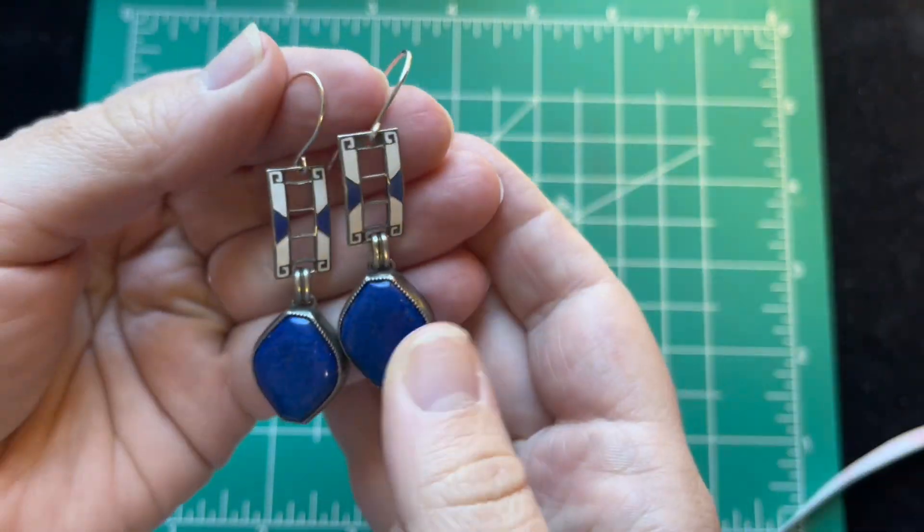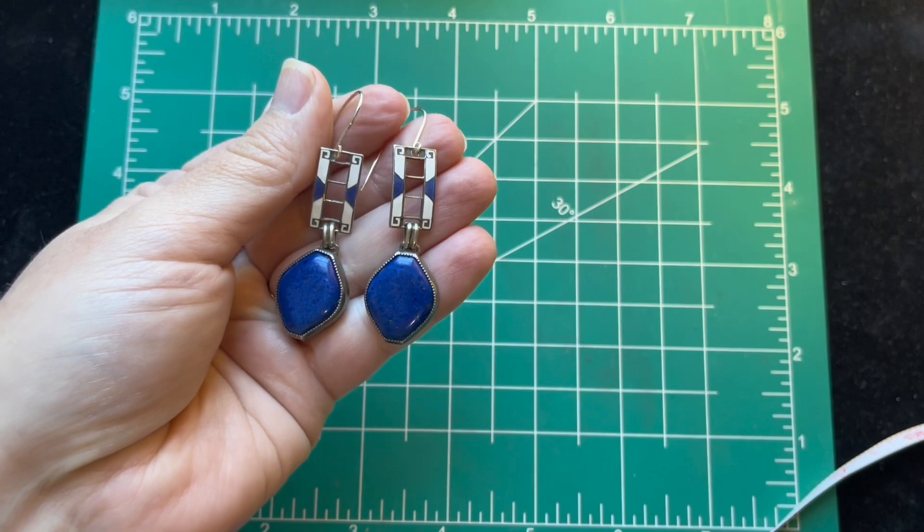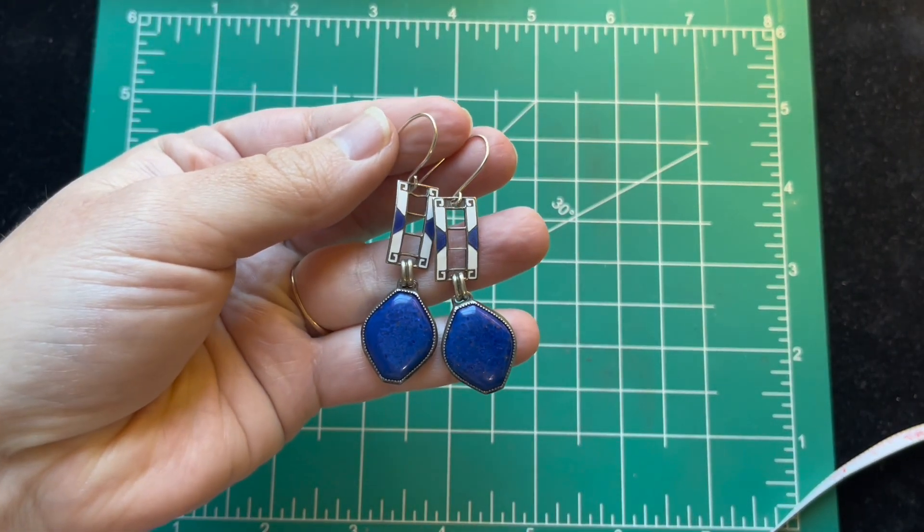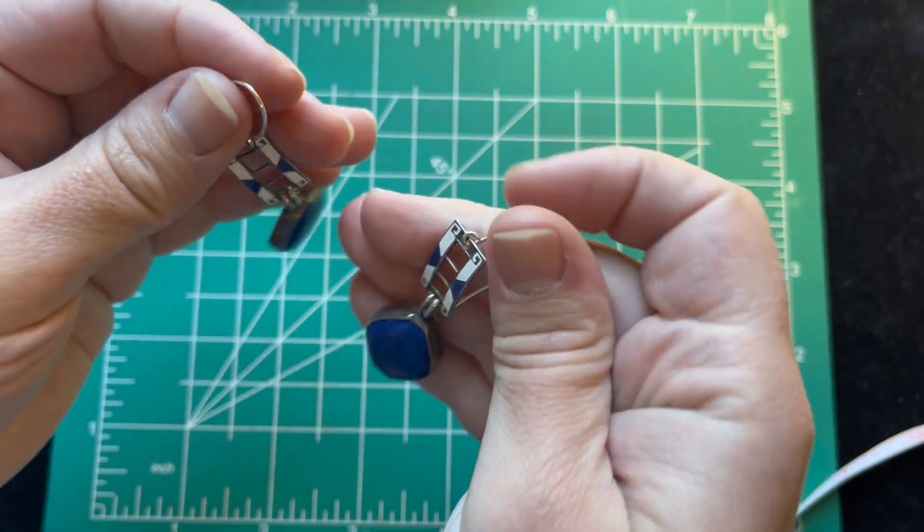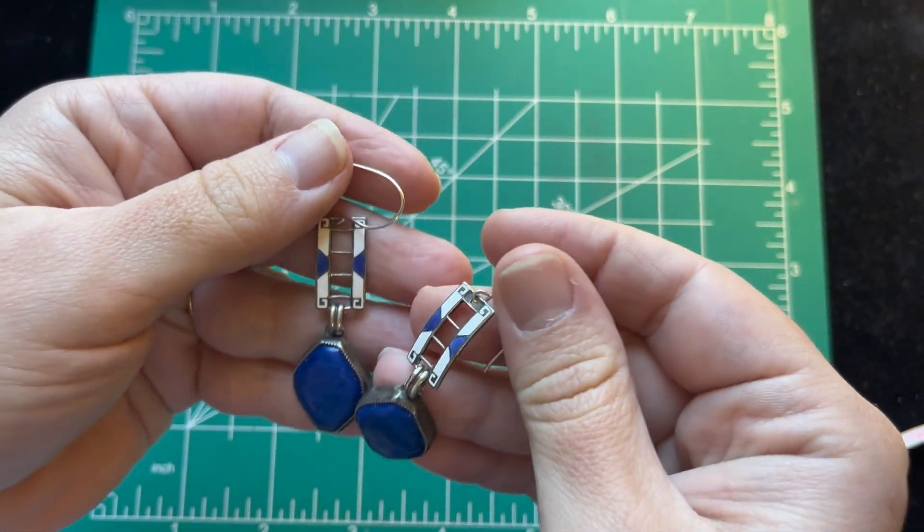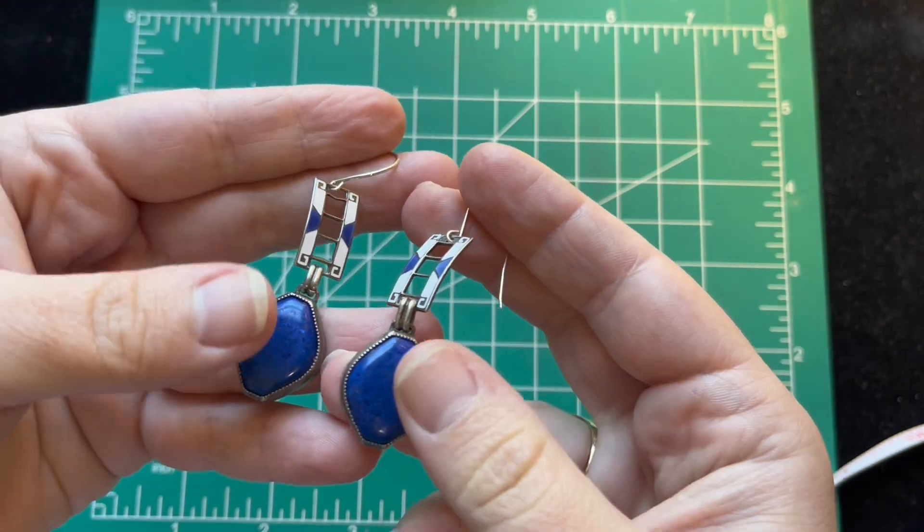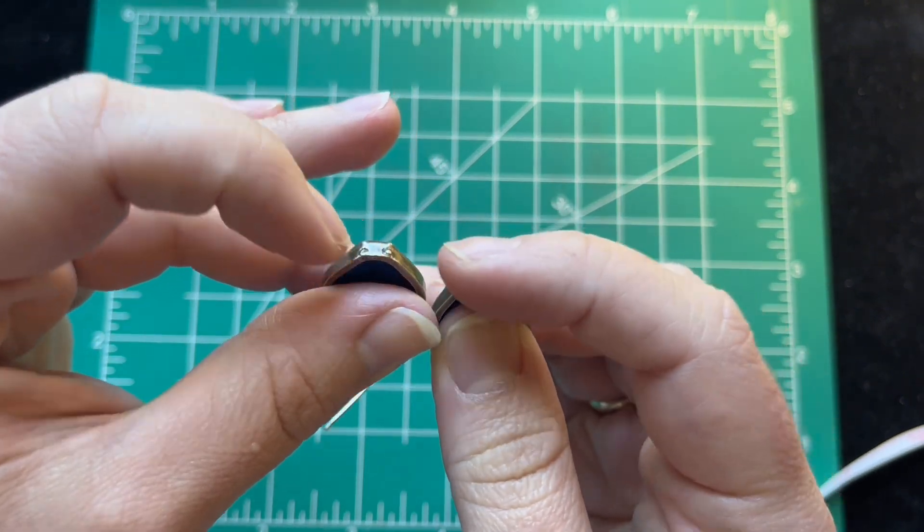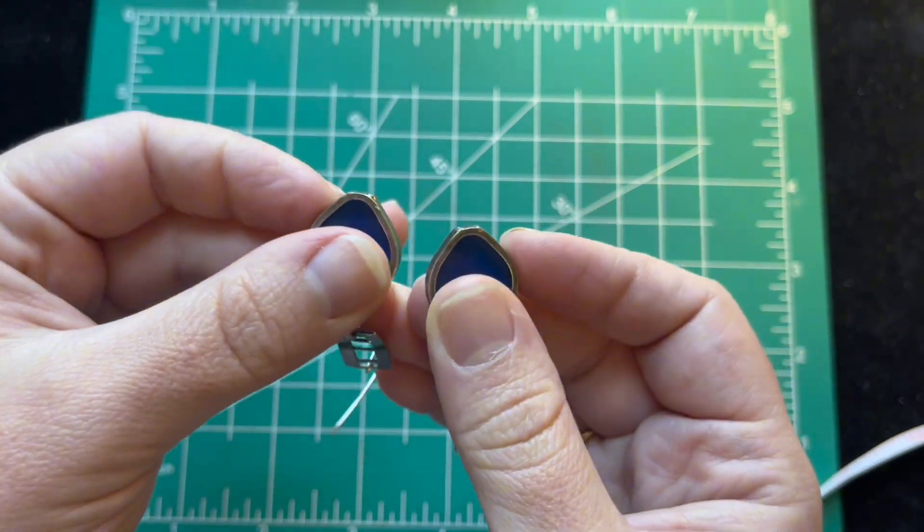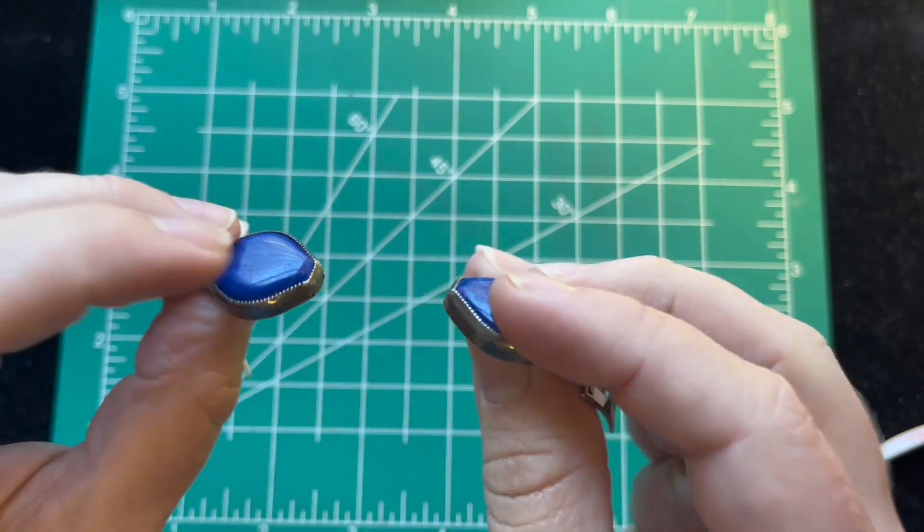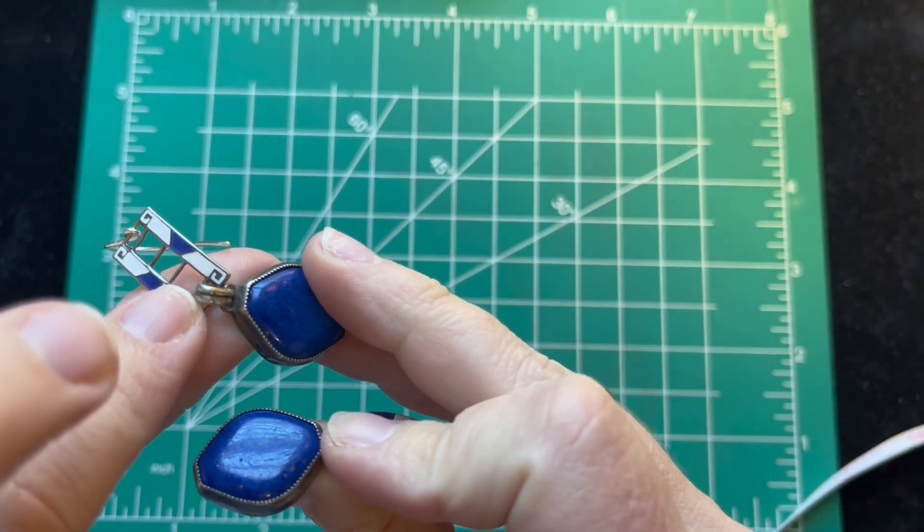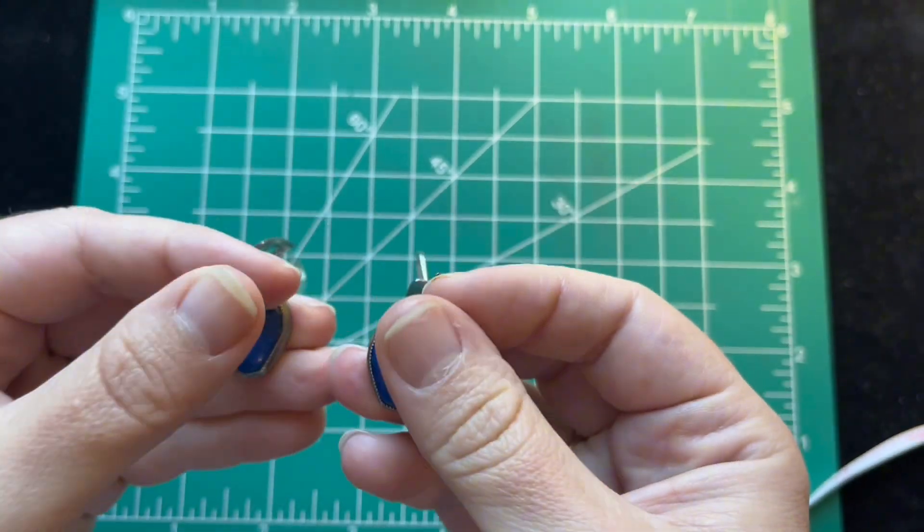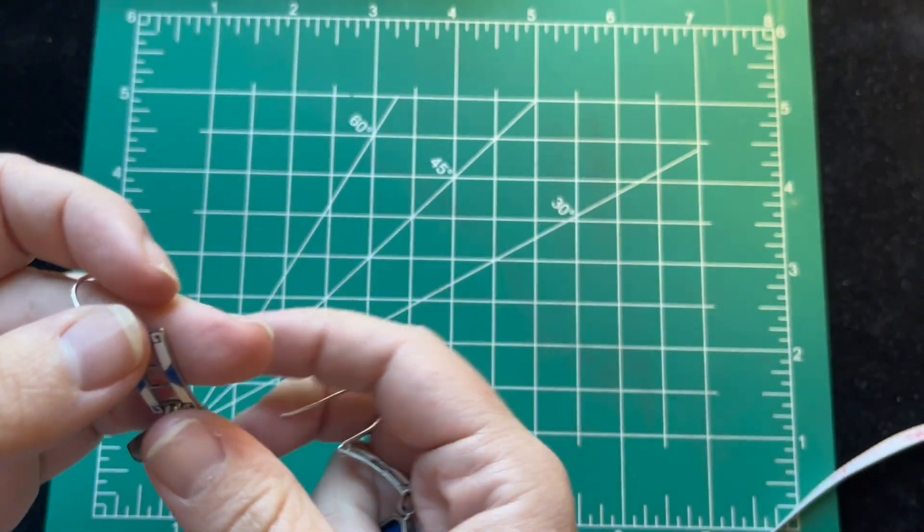They had very sharp spots right here on the ends where they were connected to the links there and they were broken off. So I just filed those down. So they are very smooth. They will not hurt you.